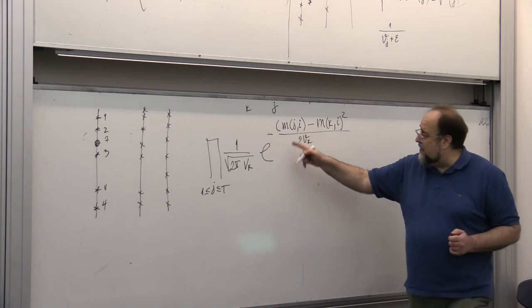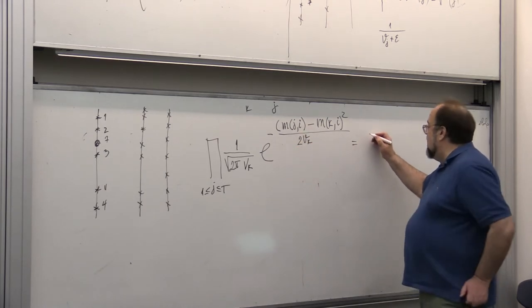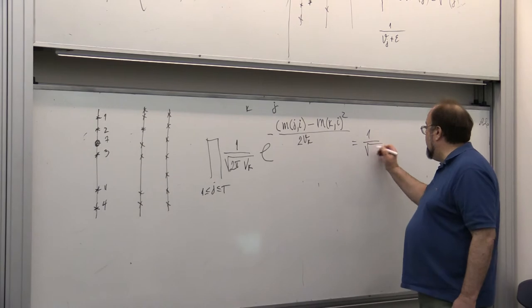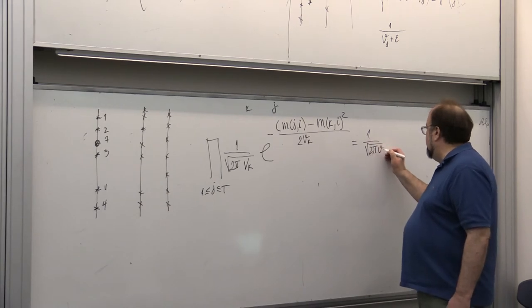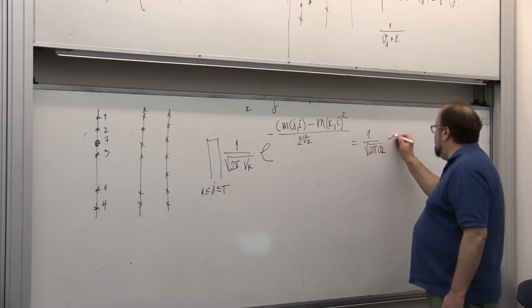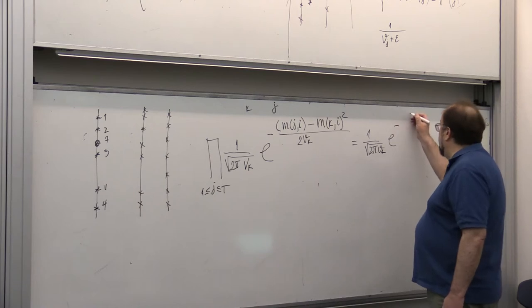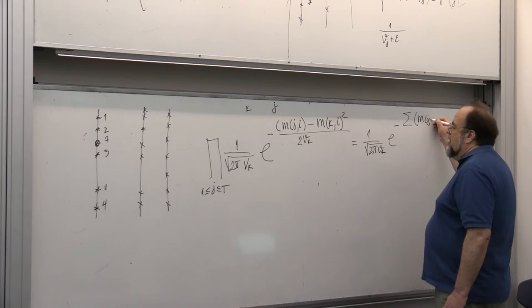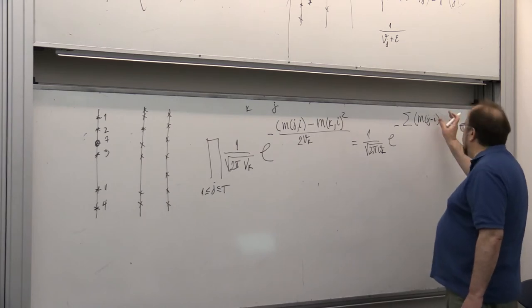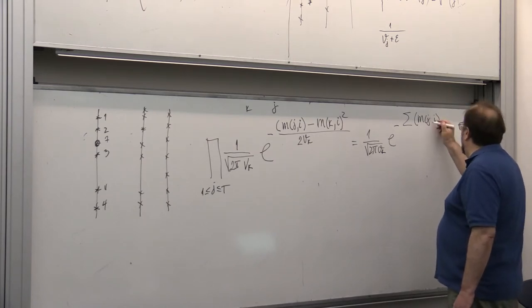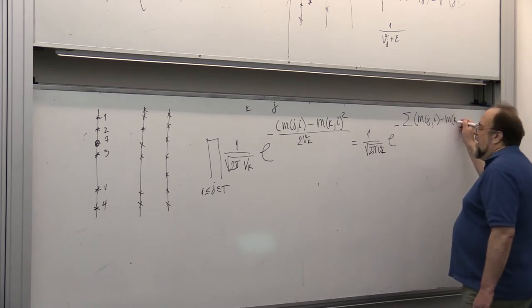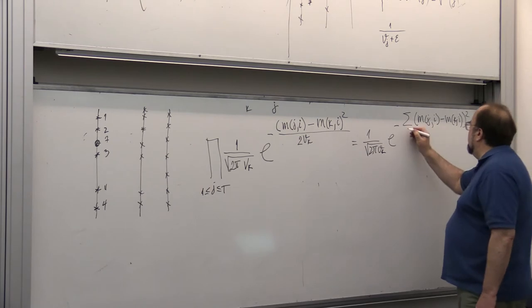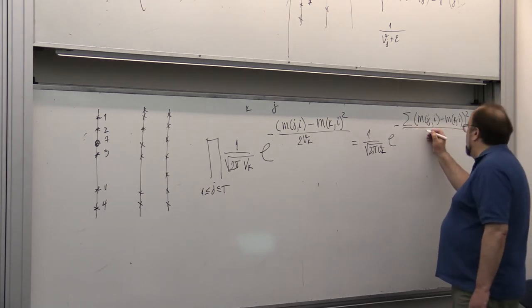And of course, this is then quickly simplified to 1 over square root 2 pi vk. And this becomes e to the minus sum of mji minus mki squared divided by 2 vk.